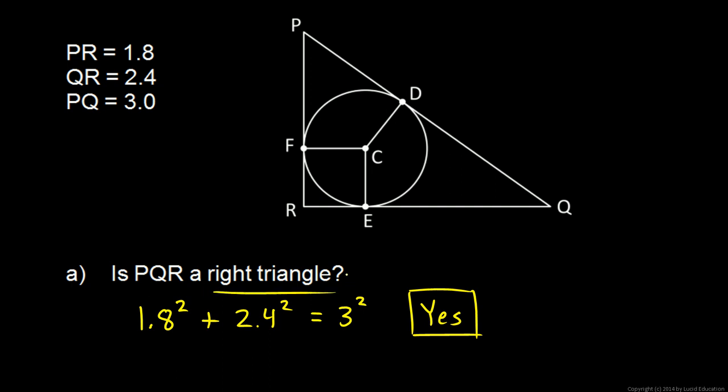Well, one thing we know is that this is a right triangle. So let's draw that in, just draw a little right angle indicator right there. And we also know that the sides of this triangle are tangent to the circle. So that means that this segment here, RF is a tangent segment from point R, and so is RE. So those segments have to be equal to each other.